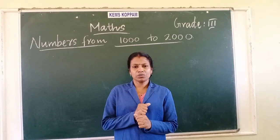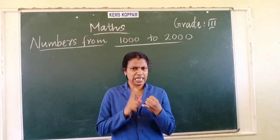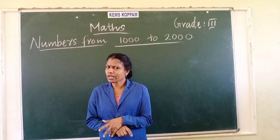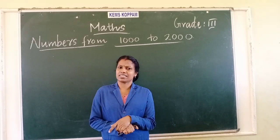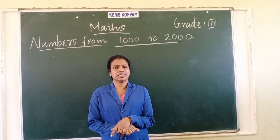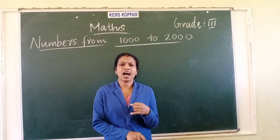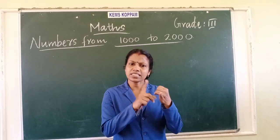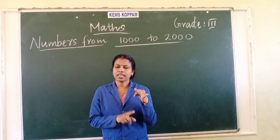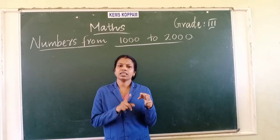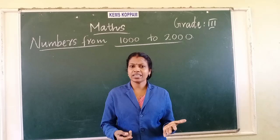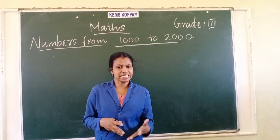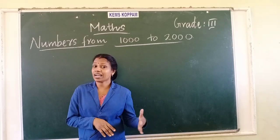Now, do you know the tens and hundreds? The tens are: 10, 20, 30, 40, 50, 60, 70, 80, 90. These are the tens.